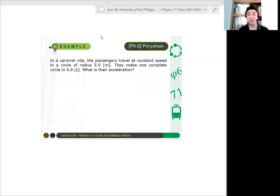Let's have another example here. In a carnival ride, the passengers travel at constant speed in a circle of radius 5 meters. They make one complete circle in 4 seconds. What is the acceleration?